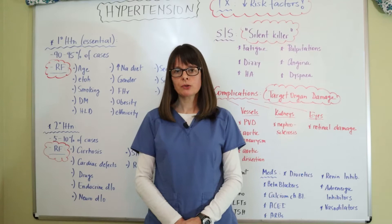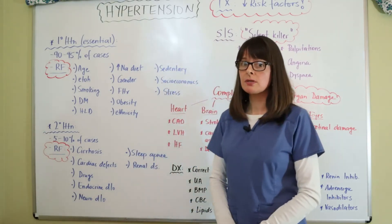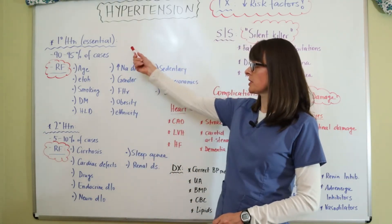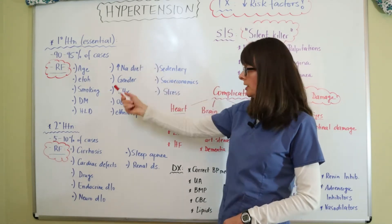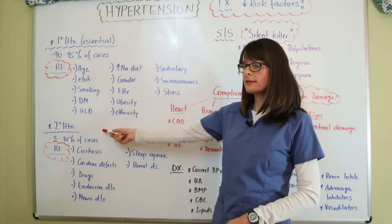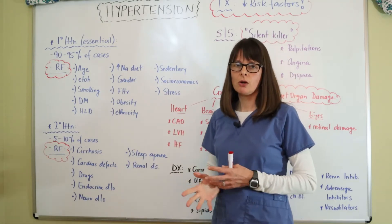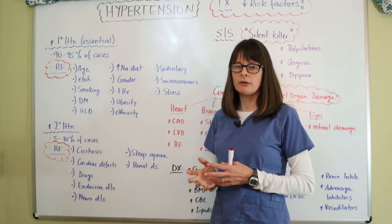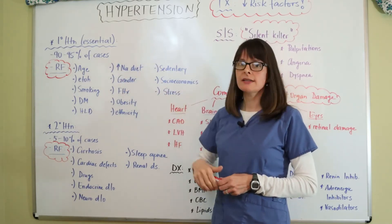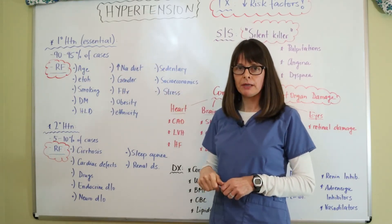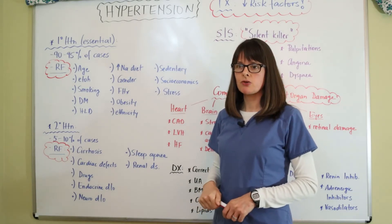For hypertension, we have to distinguish between two different types: primary hypertension, sometimes also called essential hypertension, and then secondary hypertension. While we don't really know the causes for primary hypertension, 90 to 95% of cases are classified as primary or essential hypertension.